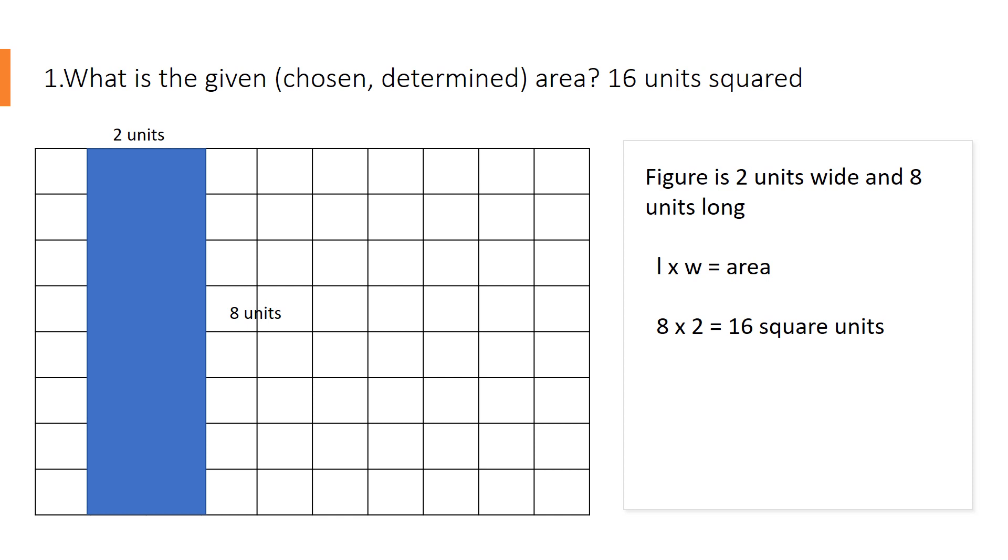What is the given area? Well, on this rectangle, it is two units wide and eight units long. So we know length times width, which is eight times two equals 16 square units.